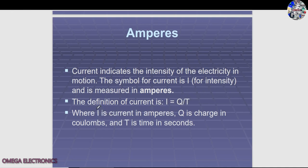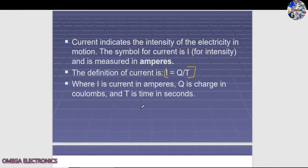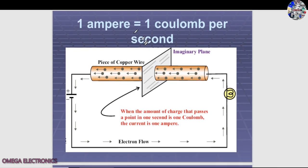The definition of current is I = Q/T, where I is the current in amperes, Q is the charge in coulombs, and T is the time in seconds. This formula gives the rate at which charge flows through a cross-section. One ampere simply means one coulomb per second — when one coulomb of electrons flows through a cross-sectional area per second, that rate is known as one ampere.